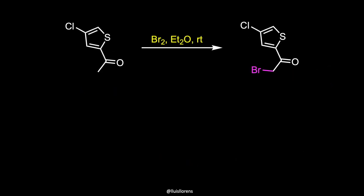The synthesis begins with an alpha-ketohalogenation of the thiophene to give the corresponding bromide. The alpha-ketohalogenation reaction usually takes place under acidic or basic conditions in an aqueous medium with the corresponding elemental halogen: chloride, bromide, or iodide.